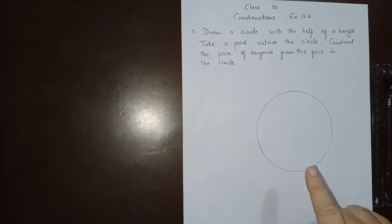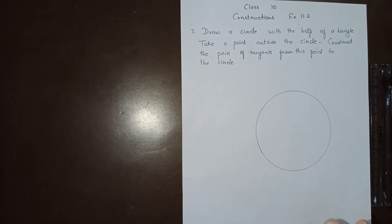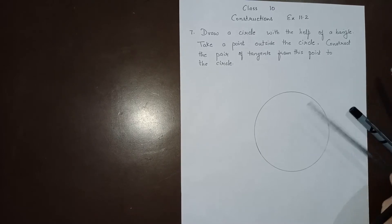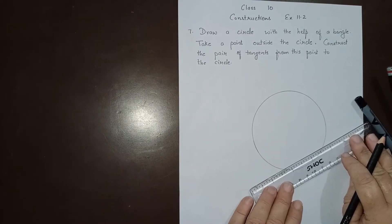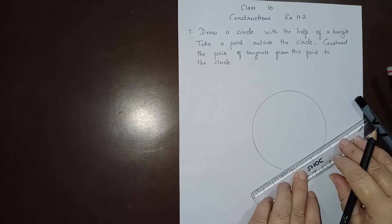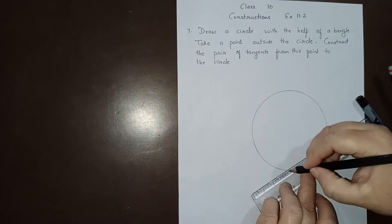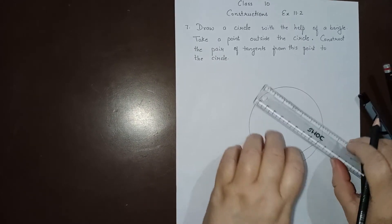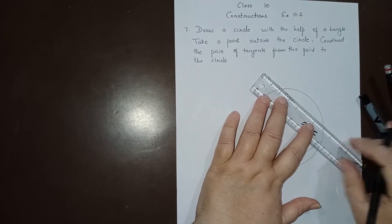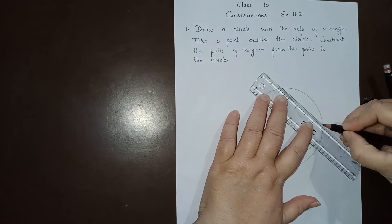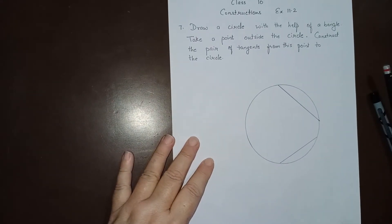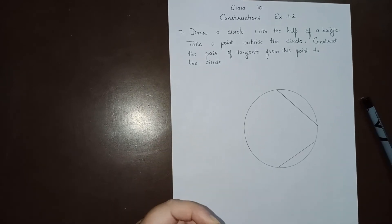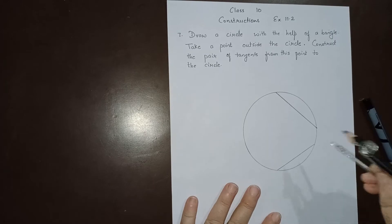We have drawn this circle with the help of a bangle. First of all, we have to locate the center of the circle. To locate the center, we will draw two chords of the circle. Draw any two chords anywhere in the circle. The center of a circle lies on the perpendicular bisectors of the chord.